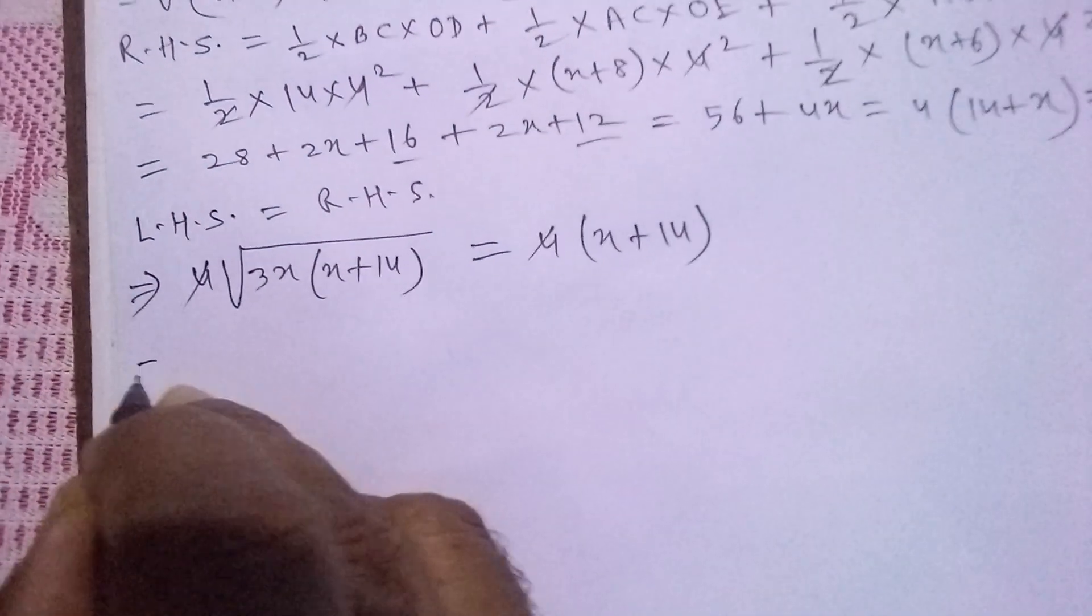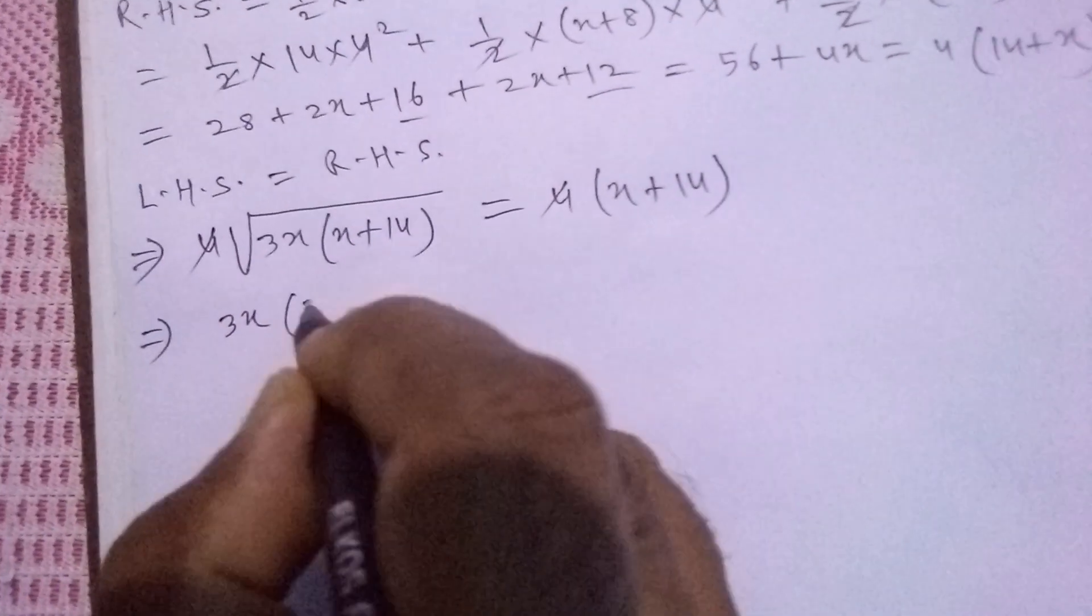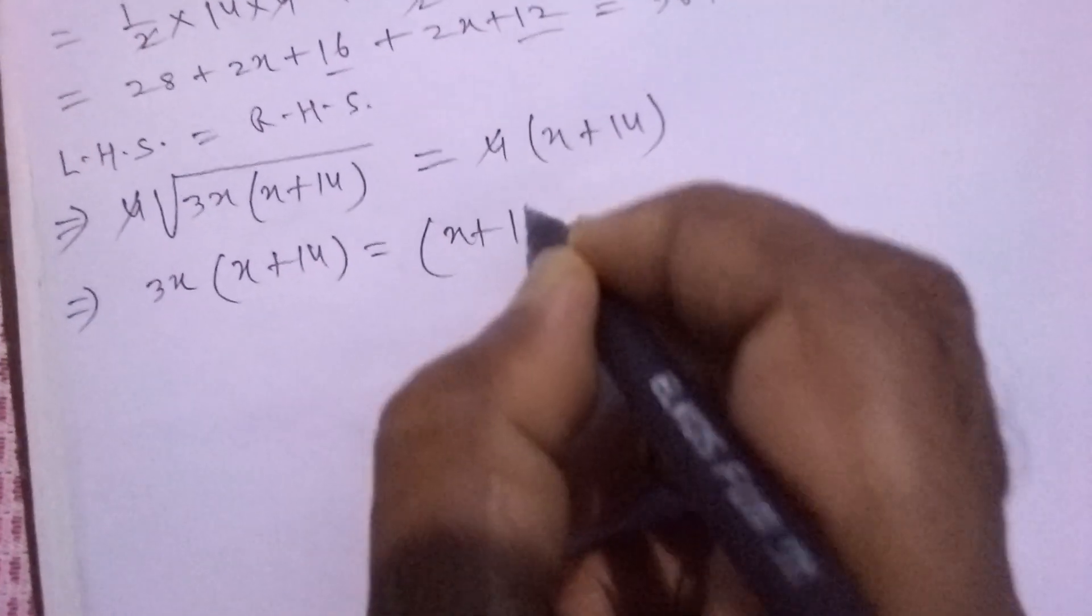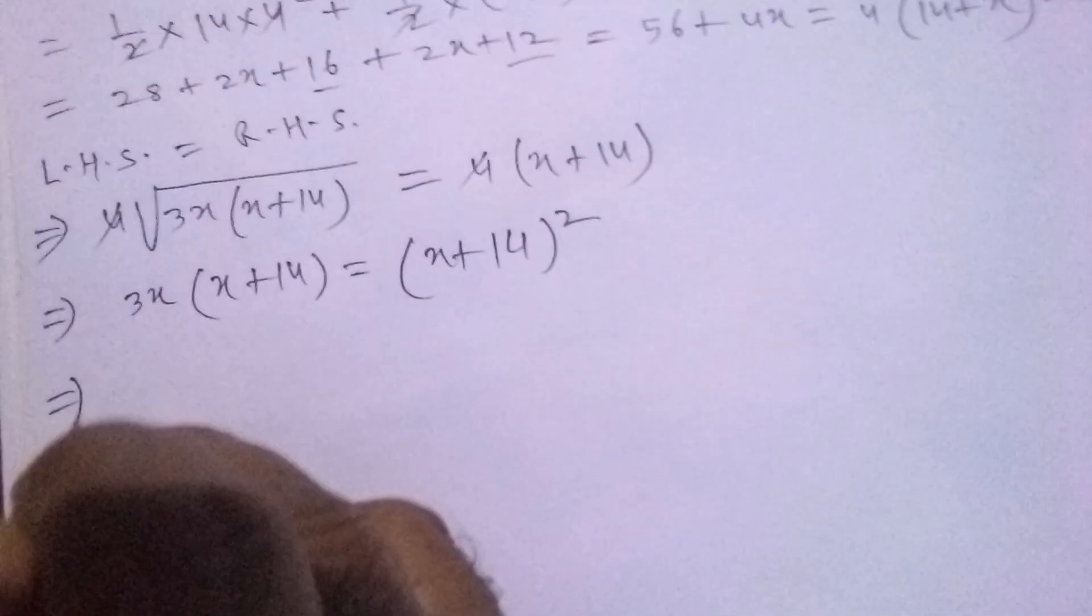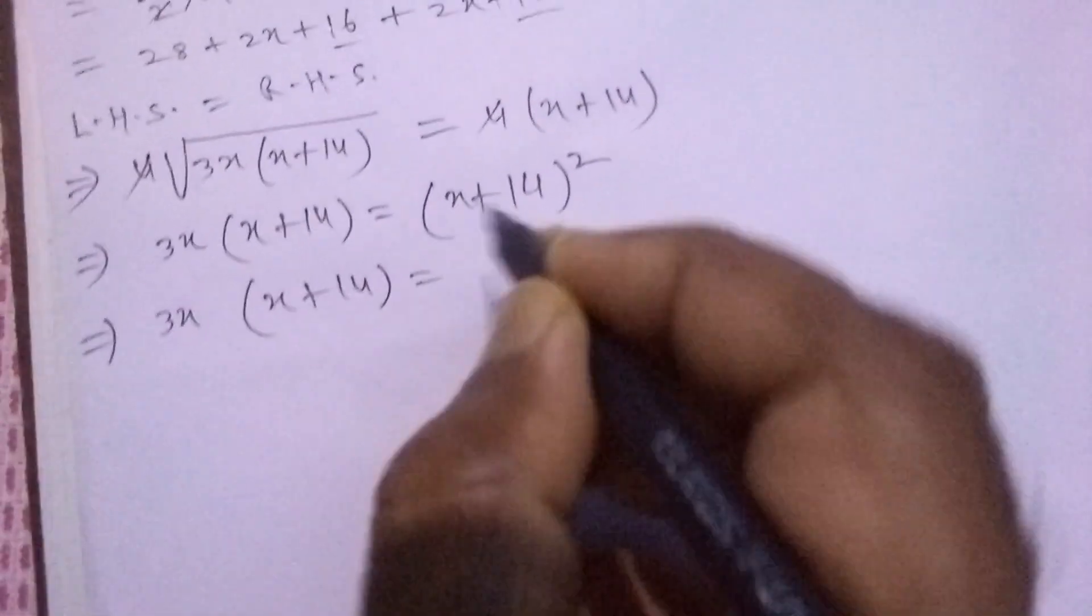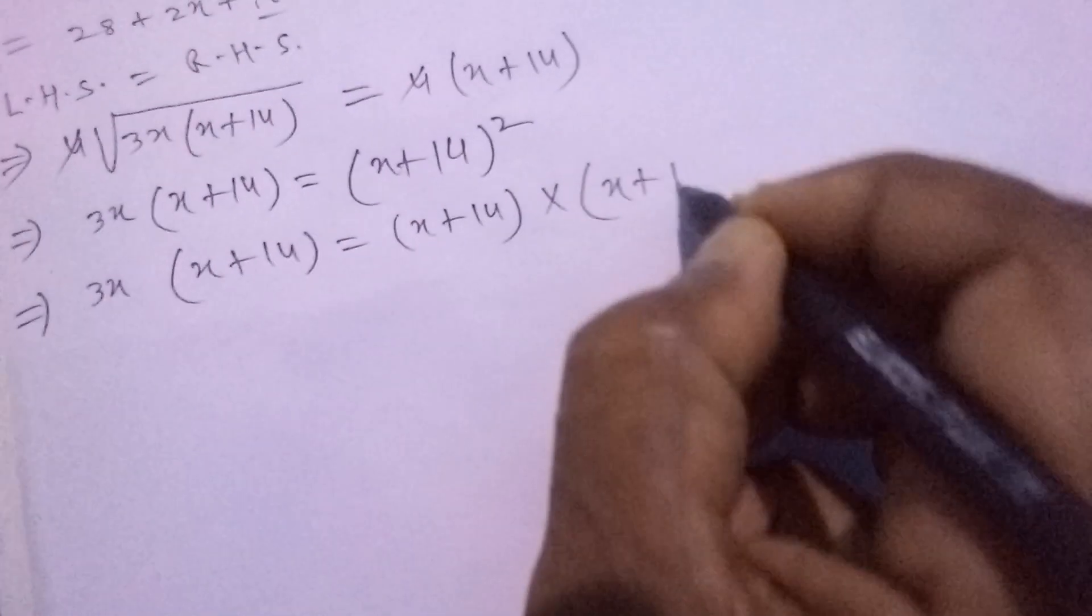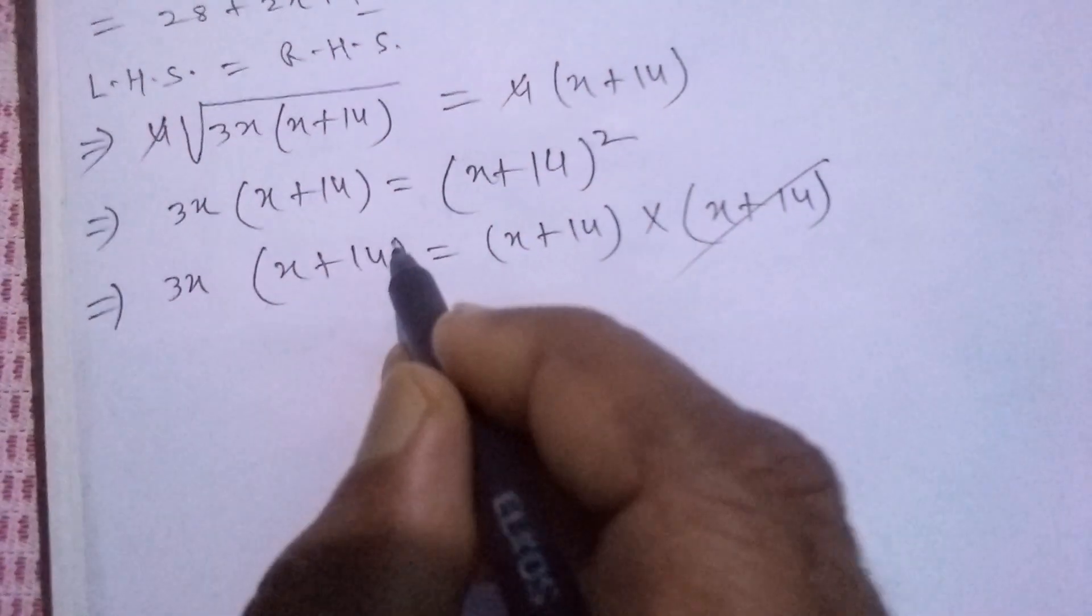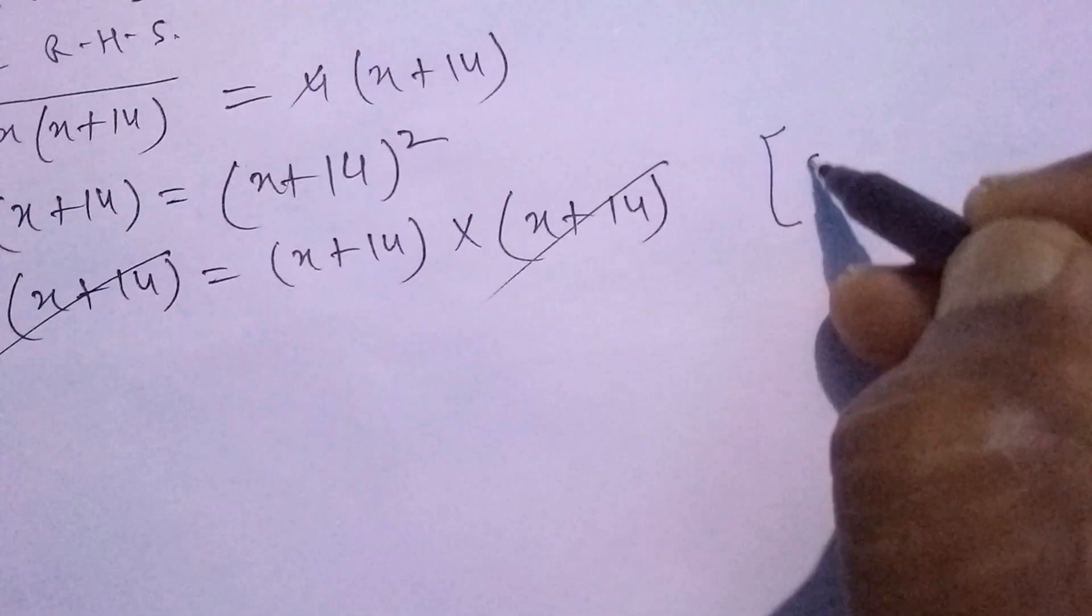The 4s cancel. Squaring both sides to remove the square root, we get 3X(X+14) equals (X+14)(X+14).